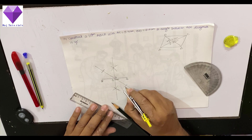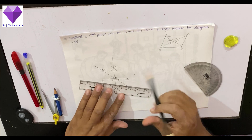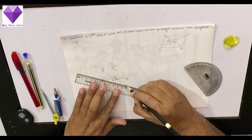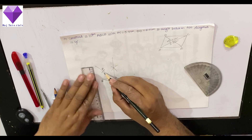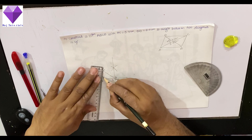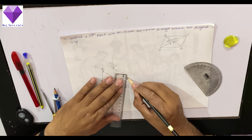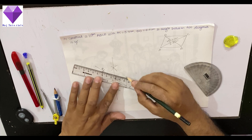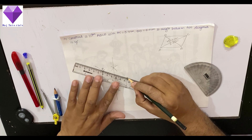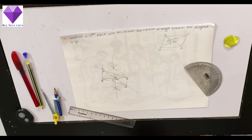So this is my B point and this is my D point. Now I will be joining AB, AD, BC, and BD to get the required parallelogram. Thank you.